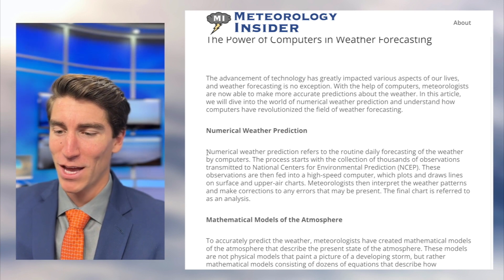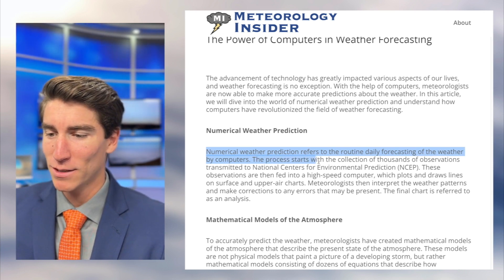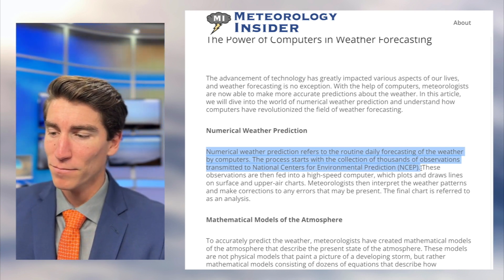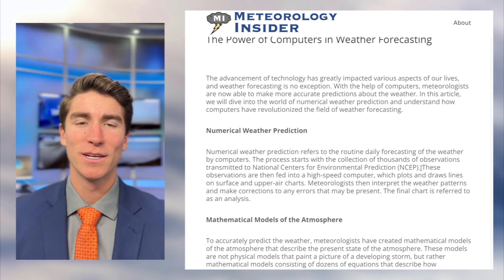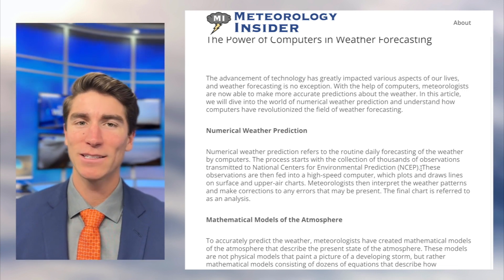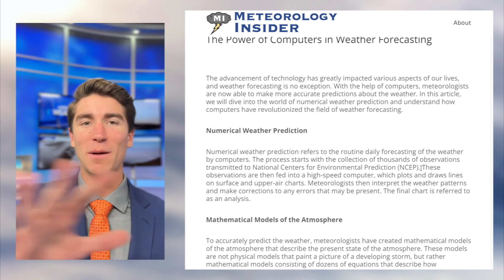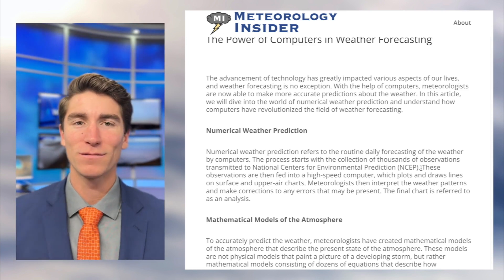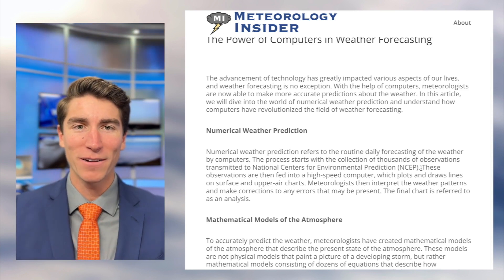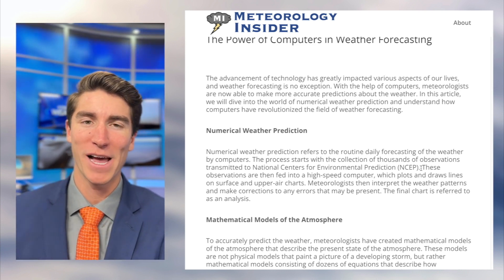Numerical weather prediction refers to the routine daily forecasting of the weather by computers. The process starts with the collection of thousands of observations transmitted to National Centers for Environmental Prediction. These come from weather stations all over the place — I've set up a couple myself — taking readings of temperature, wind, humidity, and others. You take all those observations from the earth's surface and from weather balloons that go up into the air, plug that into the models, and get a good idea of what the atmosphere looks like right now.